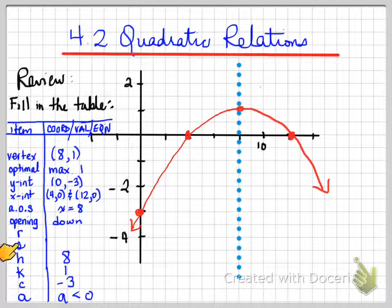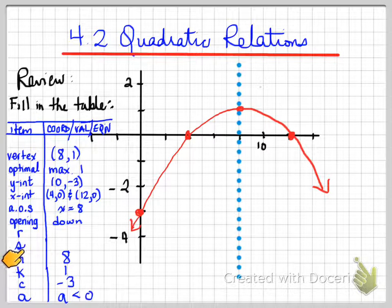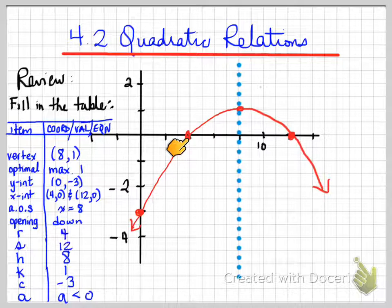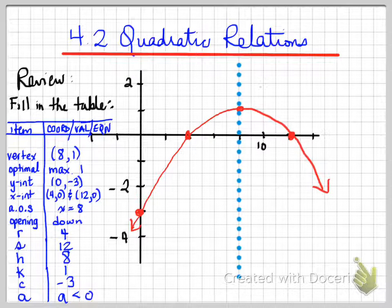S and R — what do they stand for? Both of these stand for the x-intercepts, also known as the roots. The roots are 4 and 12. So we've now filled in a chart about a specific parabola and are able to identify the different parts.